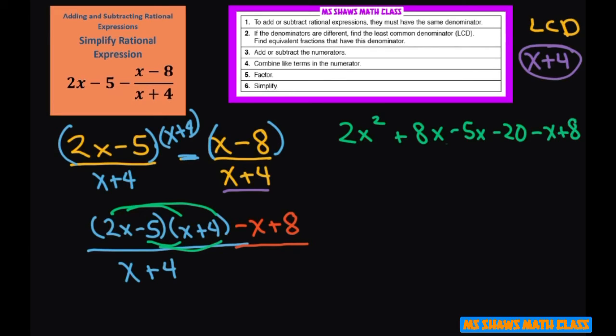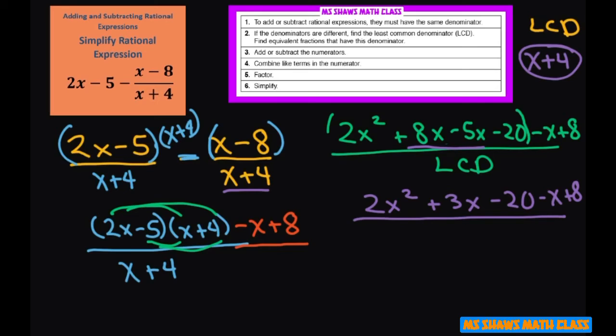So this part here was what I FOILed out over your LCD. Now if we simplify this, we get 2x squared plus 3x minus 20 minus x plus 8 divided by your LCD.